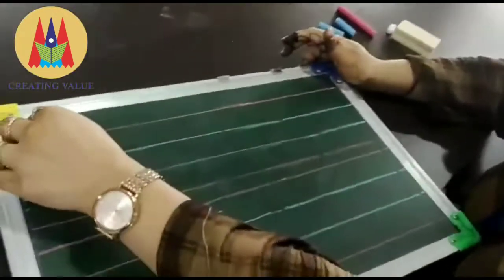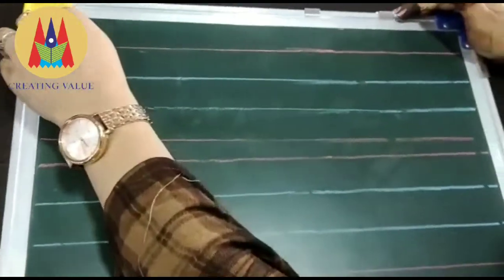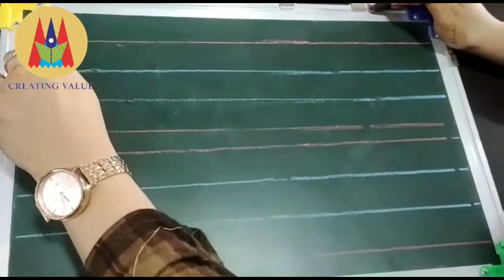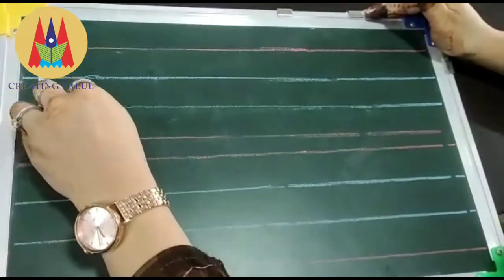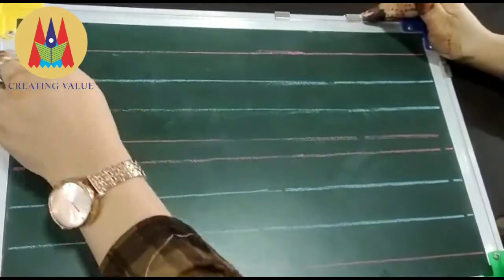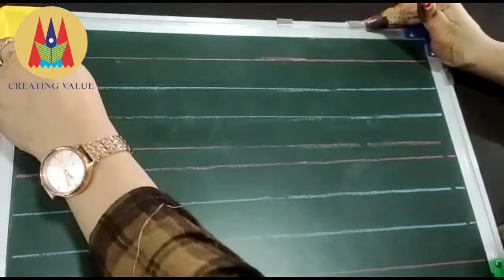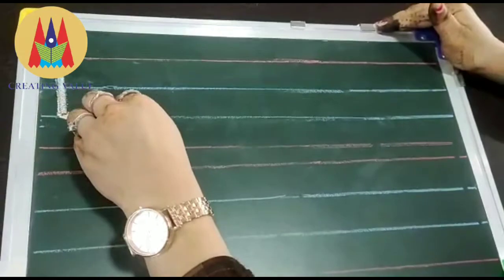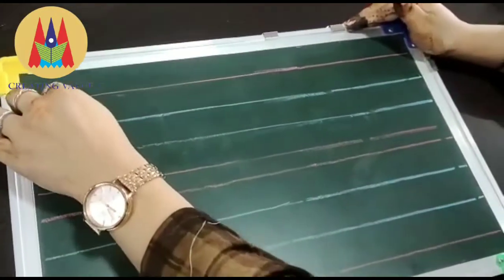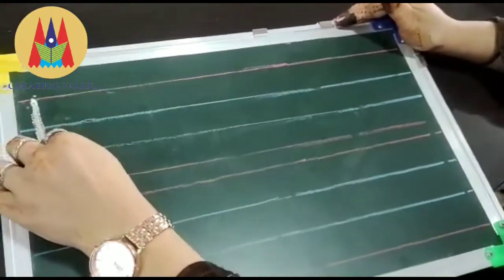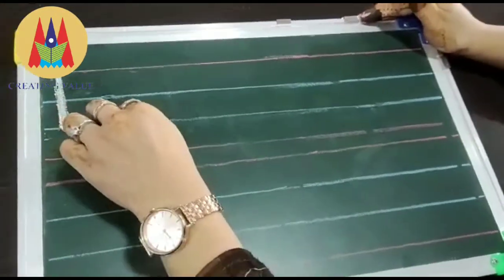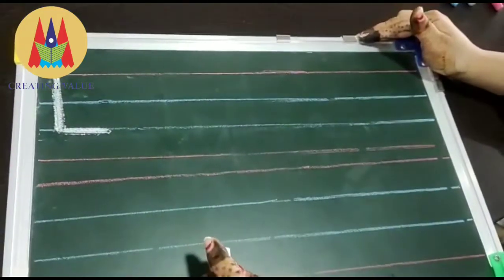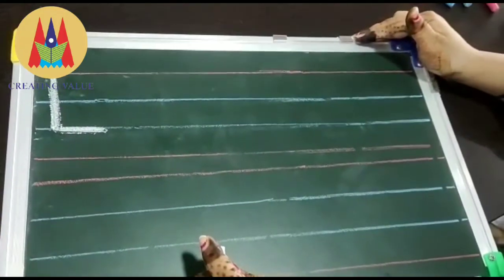First I will write letter L — standing line and sleeping line. Red to blue standing line and in blue sleeping line. This is letter L. L for lion, L for lotus and L for lamp.